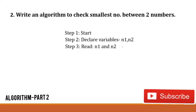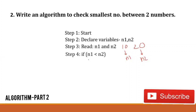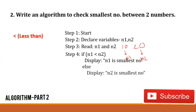Suppose I enter 10 and 20. So 10 is the value of n1 and 20 is the value of n2, and I want to check which one is the smallest number. In step four we check whether n1 is the smallest — that is, whether 10 is smallest — or n2 is the smallest — that is, 20. We check: if n1 is less than n2, then n1 is the smallest number; we display 'n1 is the smallest number.' But if n1 is not the smallest, then n2 will be the smallest number. The last step is stop.